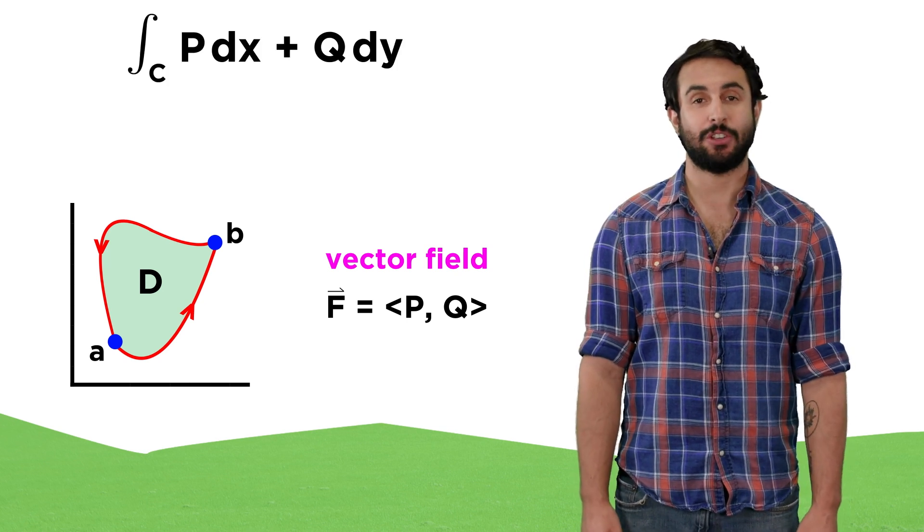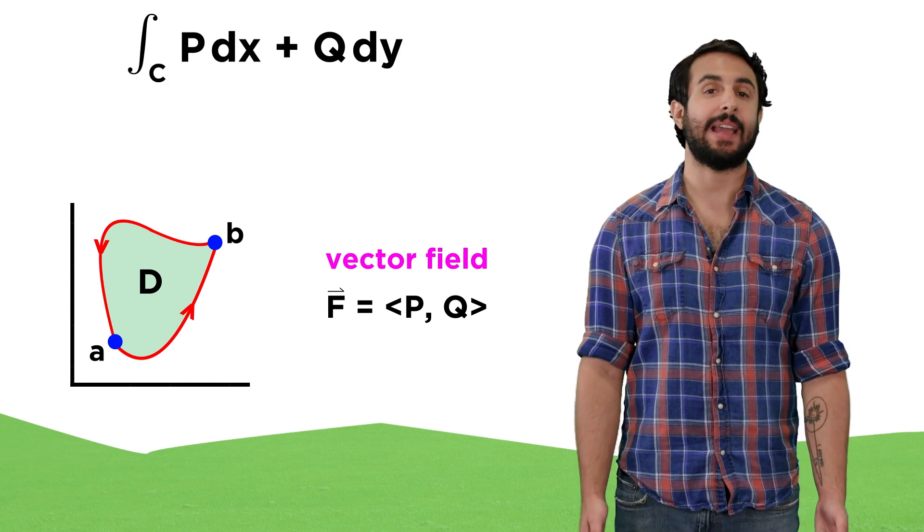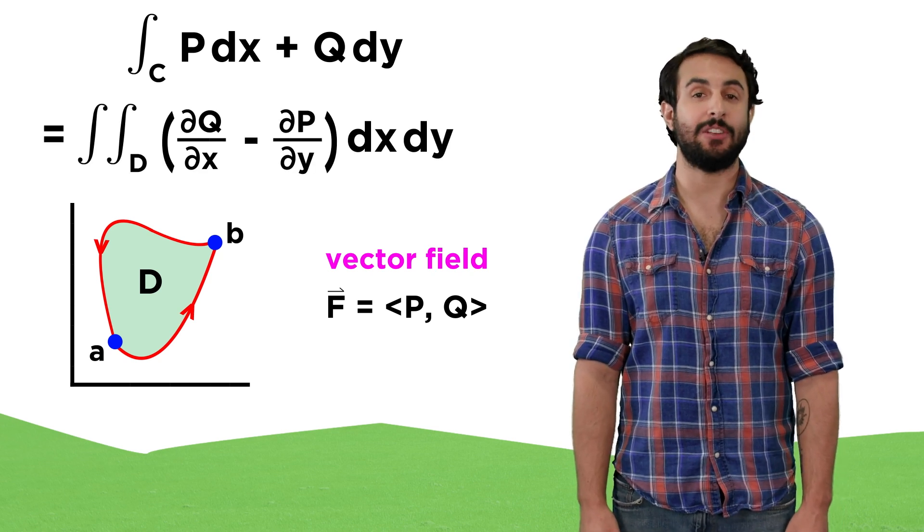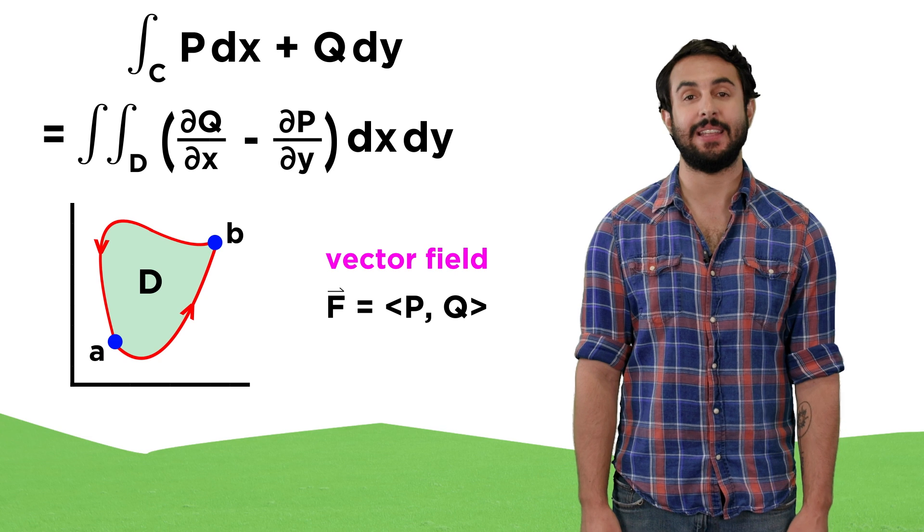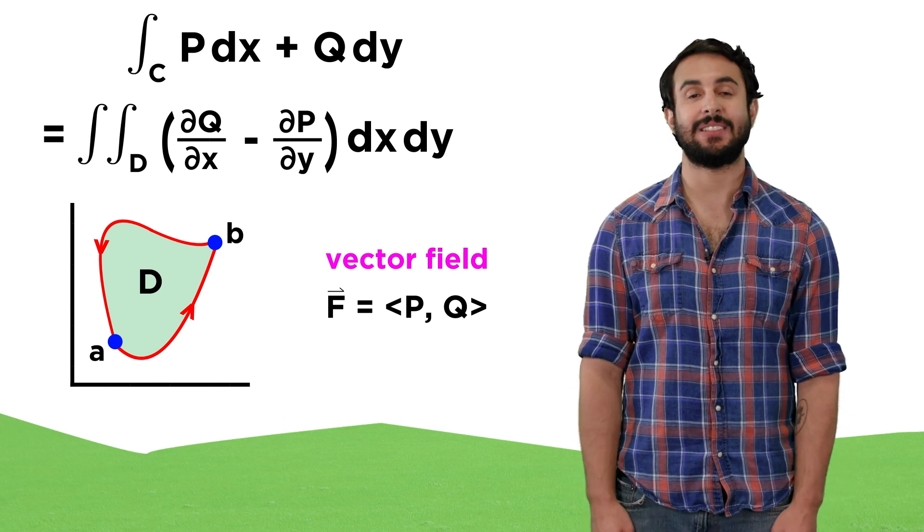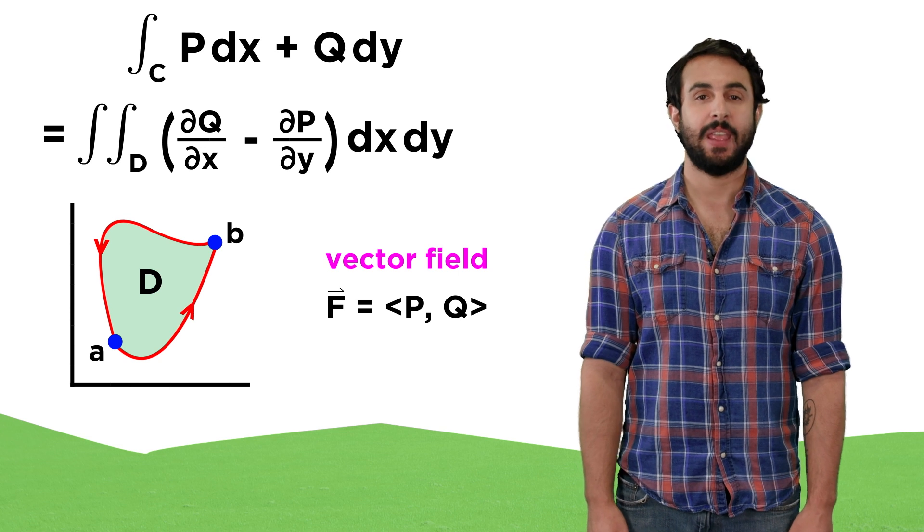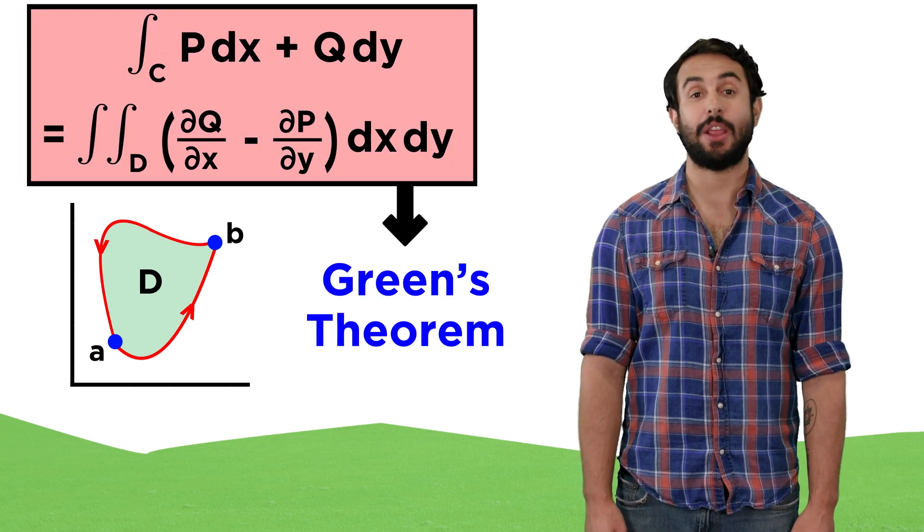For these cases, the line integral over C of Pdx plus Qdy ends up being equal to the double integral over the domain D of dQ/dx minus dP/dy dxdy. This is called Green's Theorem.